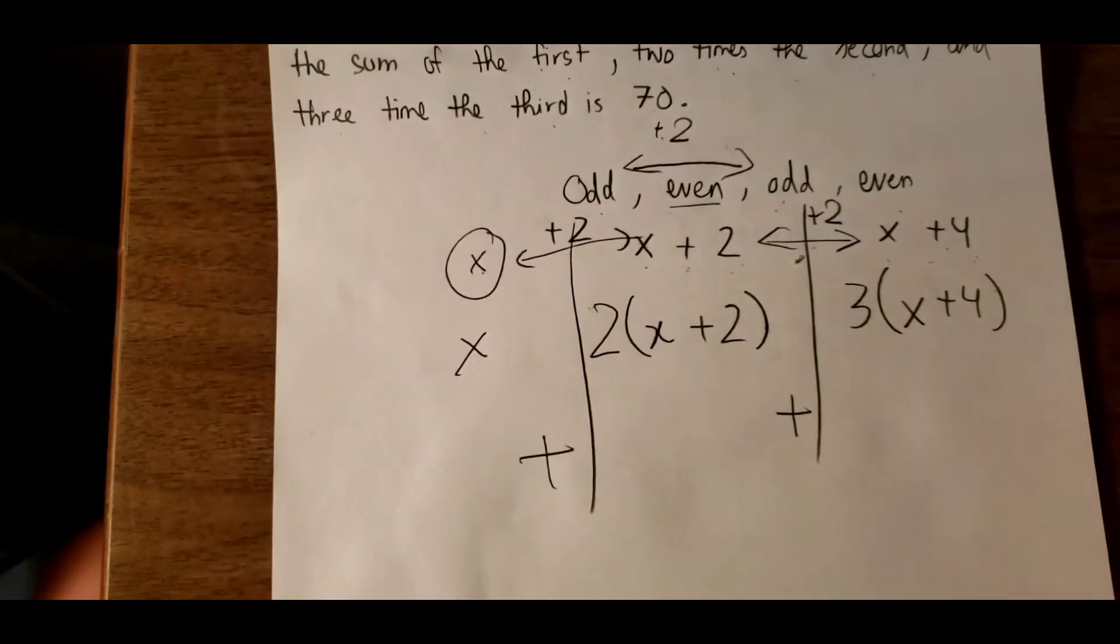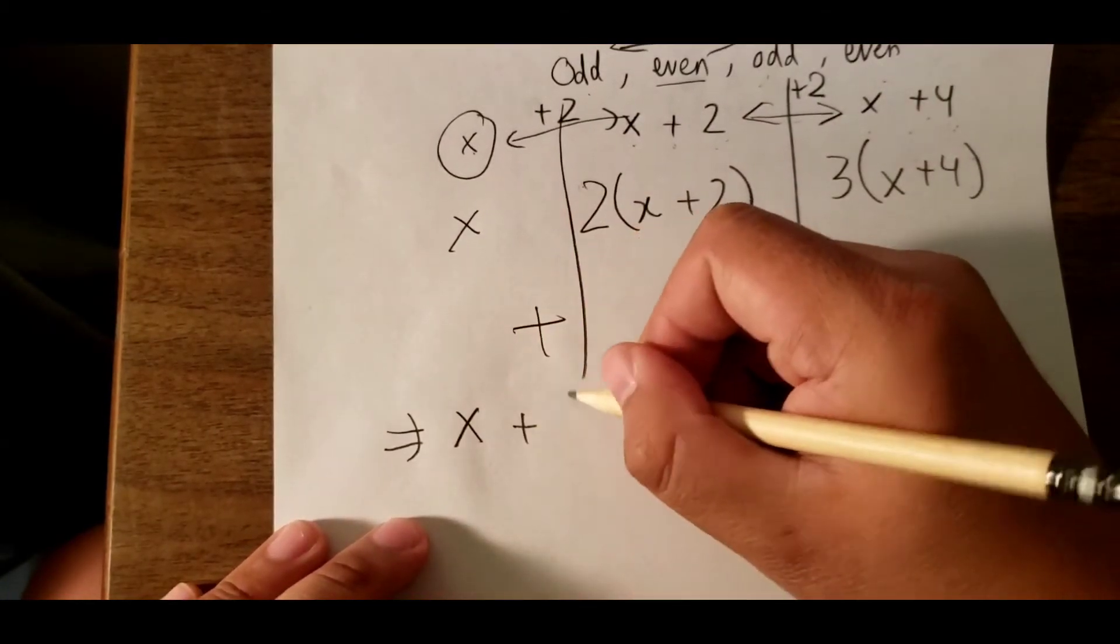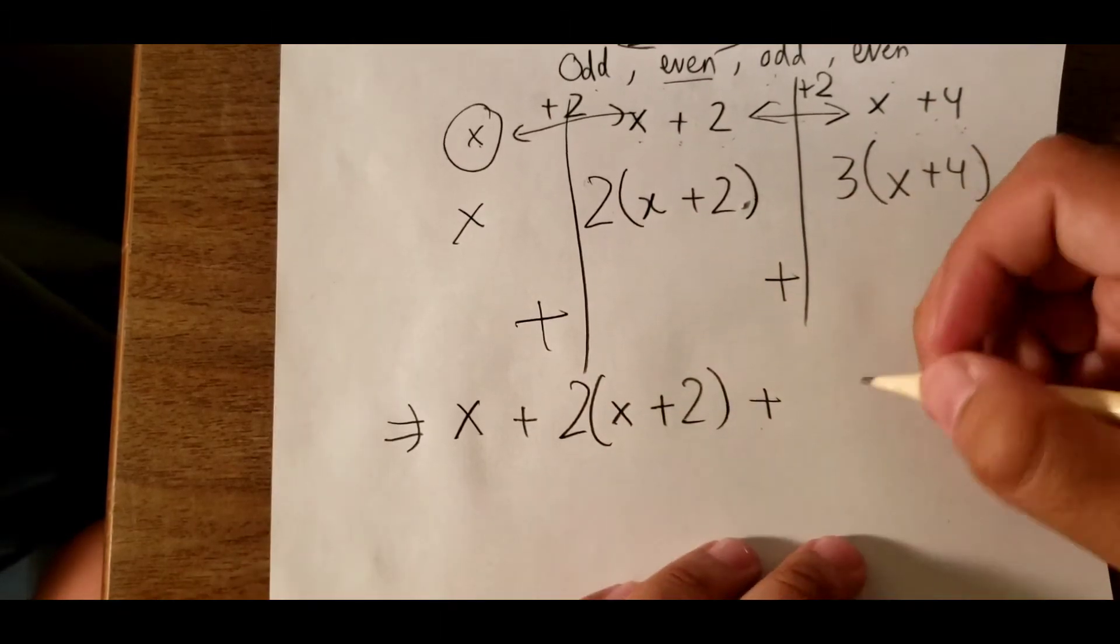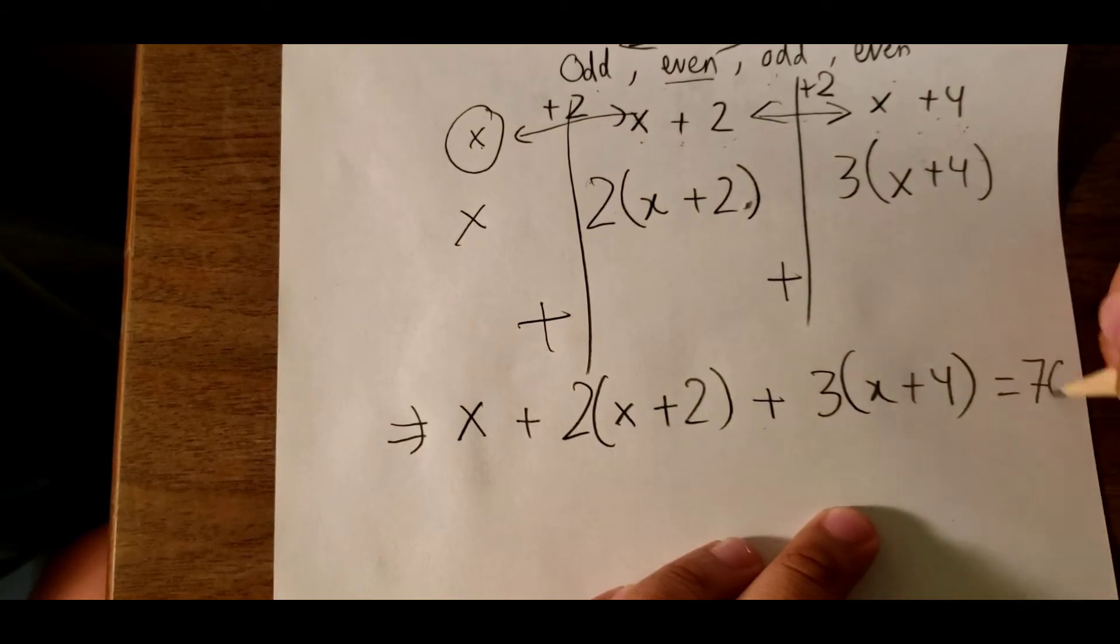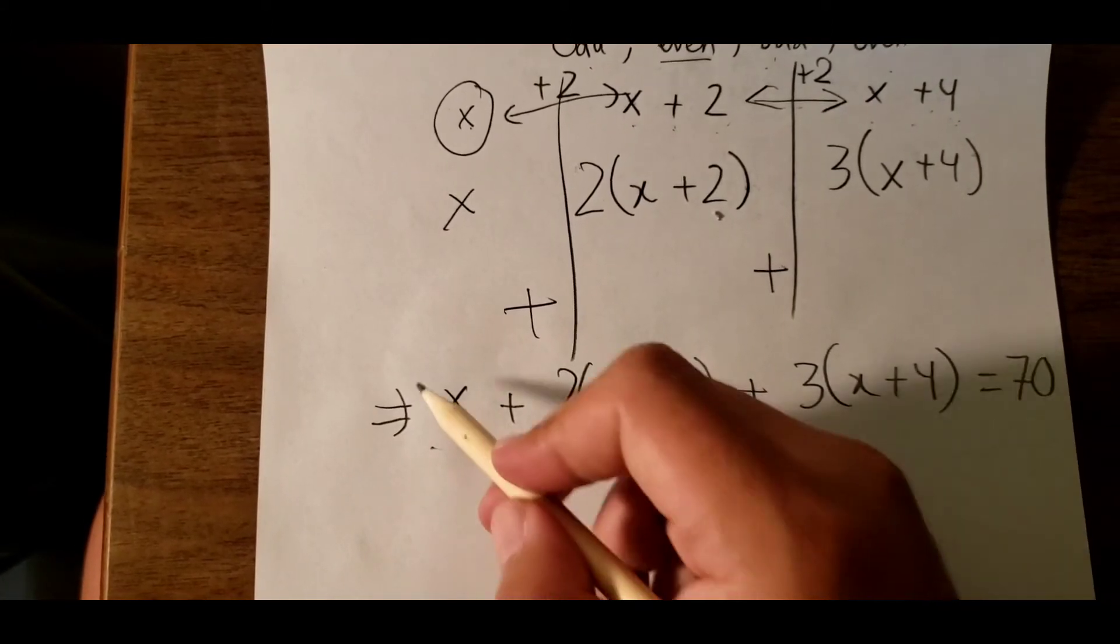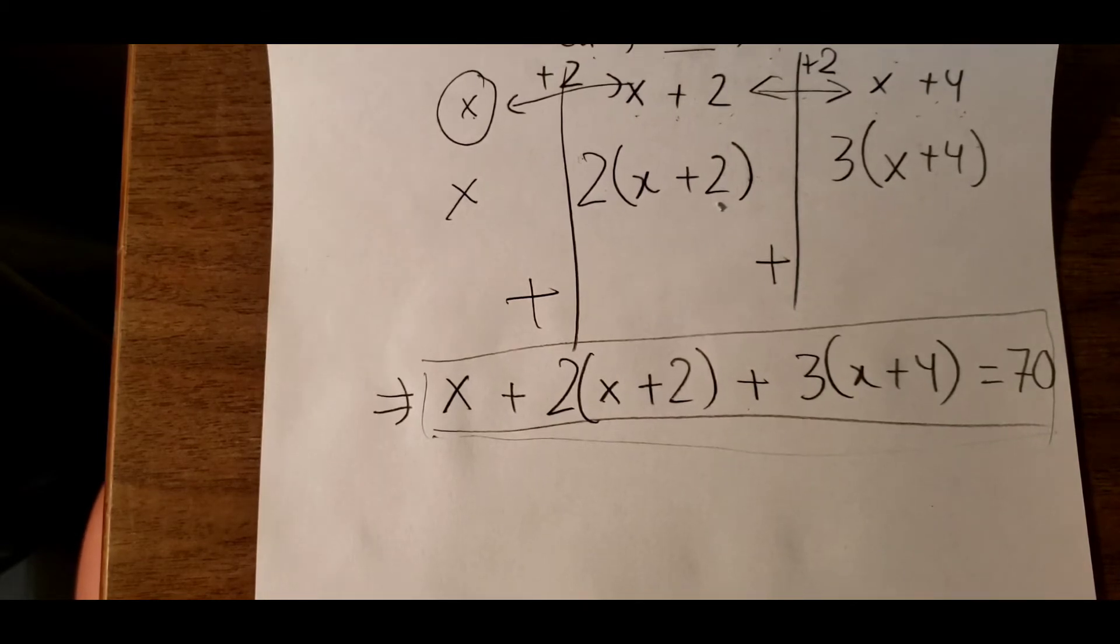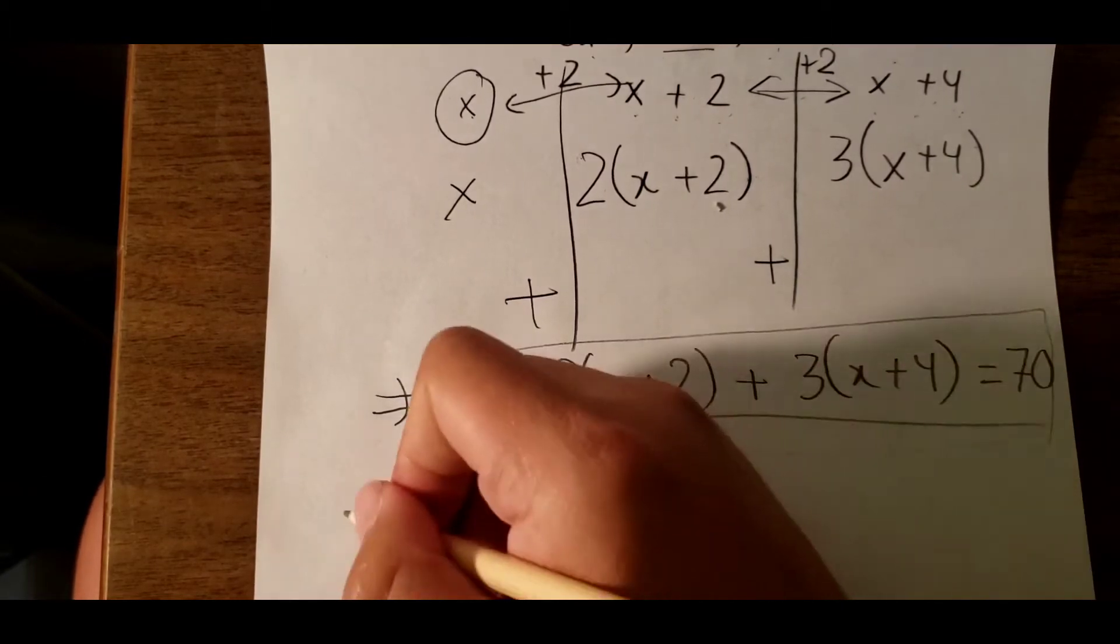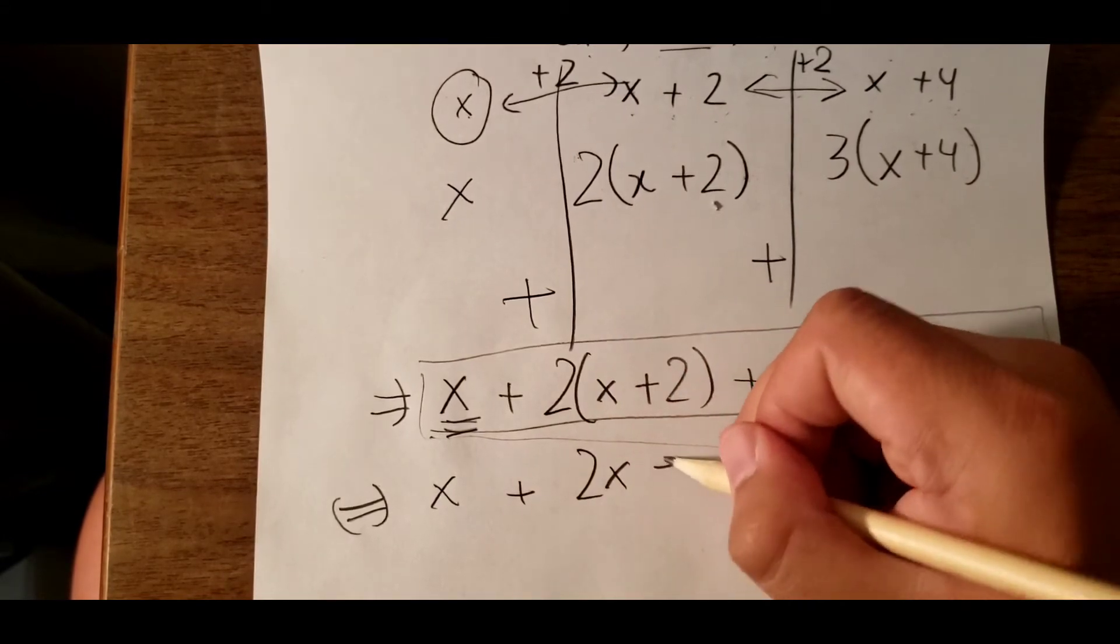So we have three numbers and we just combine them together and we have the equation. That's how to create the equation. Now the final thing is to calculate this equation and find the first number. We have x, we have 2x plus 4...